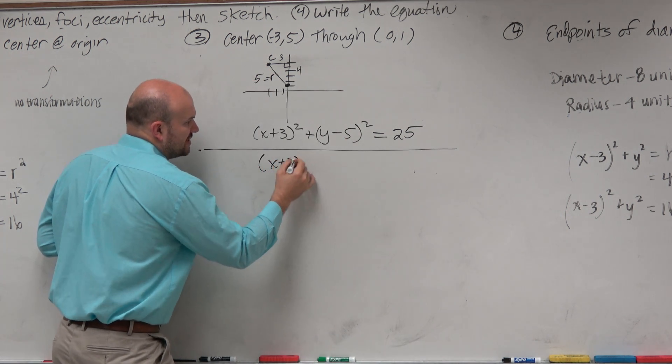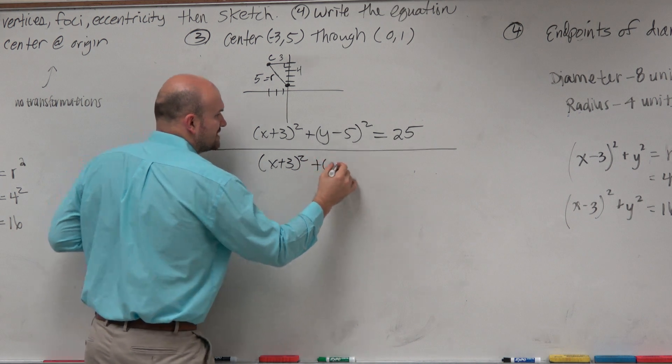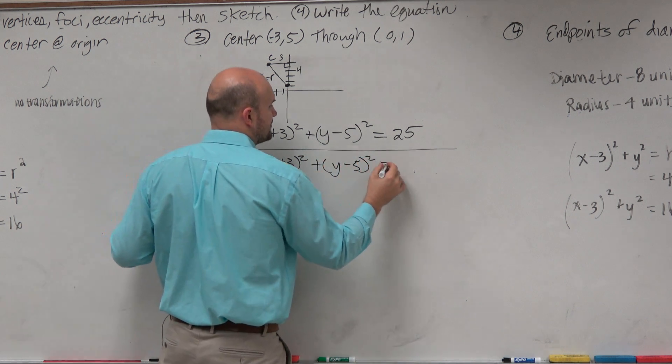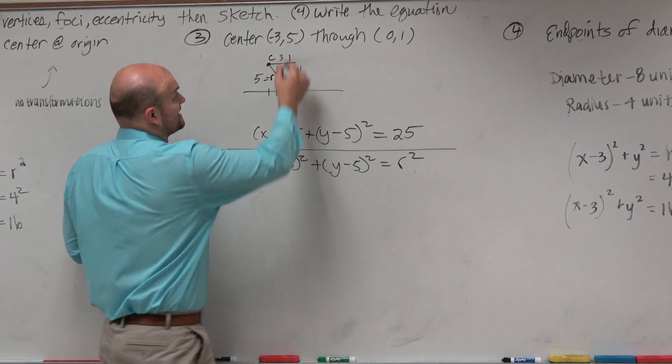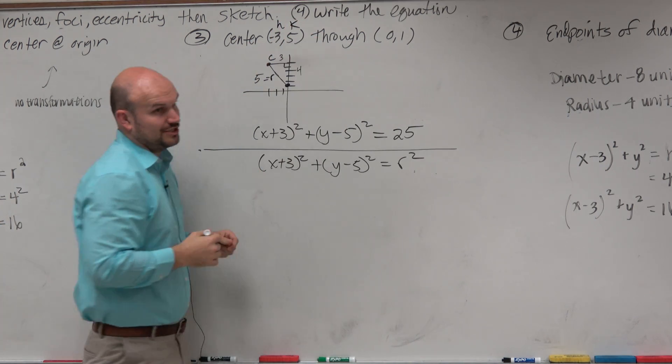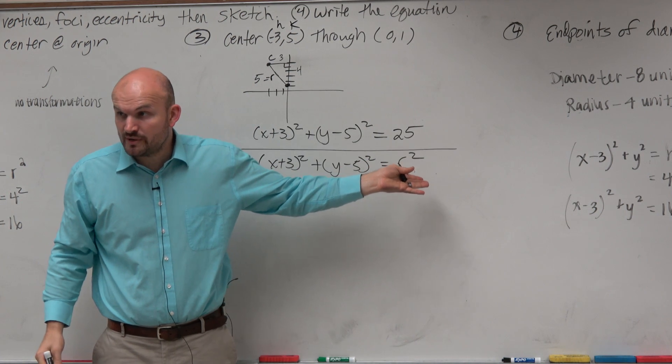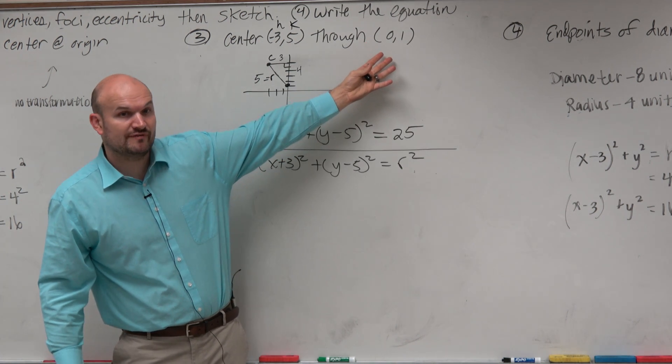What if we said, instead of graphing it, let's think about this a different way. We know this is the center. They give us the center. That's easy. That's (h,k). They gave us h,k. We just don't know r². However, they give us another piece of information, (0, 1).